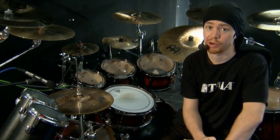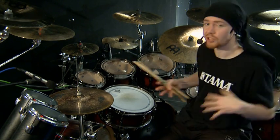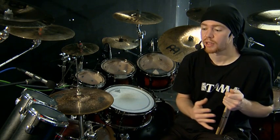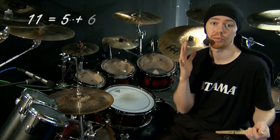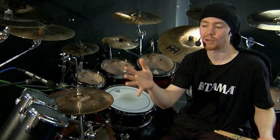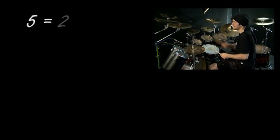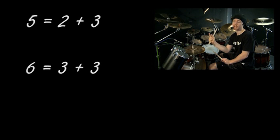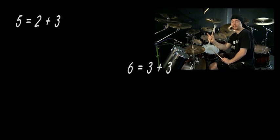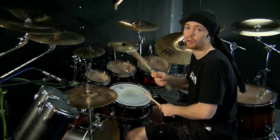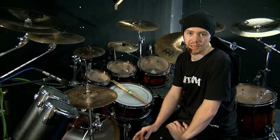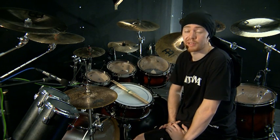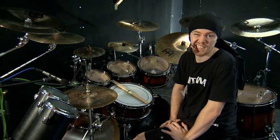The same principle works for 9, 11, and all those things — it's just a matter of how you count and subdivide it. For instance, if you have 11 — whether 11-4 or 11-8 — you could subdivide it into 5 and 6. The first part is the 5: 1-2-1-2-3. Then you have 1-2-3-1-2-3 which equals 6. So 11 is subdivided into 2+3+3+3: 1-2-1-2-3-1-2-3-1-2-3. The same principle applies for groupings like 5-8, 7-8, 9-8, 11, and more complicated signatures like 13th or 15th.